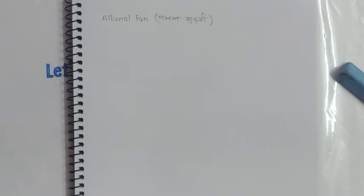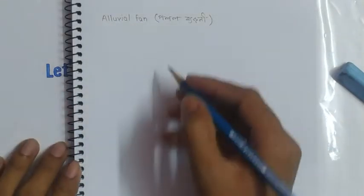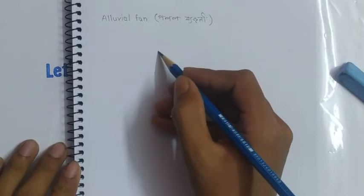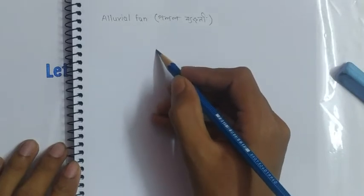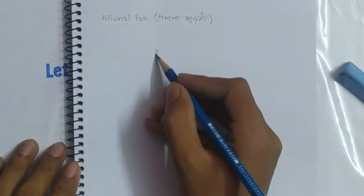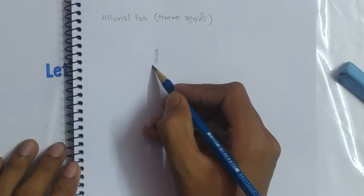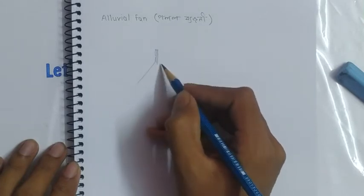Hello guys, this is Anup Kumar and today I am going to show you how to draw an alluvial fan. So let's begin. At first make a line like this and another parallel line beside this. Now make a shape like this.